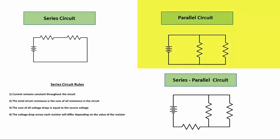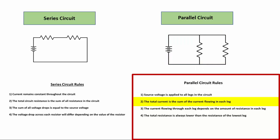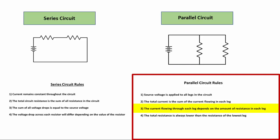When working with a parallel circuit, we need parallel circuit rules. Rule one: source voltage is applied to all legs in the circuit, meaning each resistor or load has the full source voltage available to it. Rule two: the total current is the sum of the current flowing in each leg or branch. So the current through resistor one and the current through resistor two, added together, equals the total current. Rule three states that the current flowing through each leg depends on the amount of resistance in each leg.